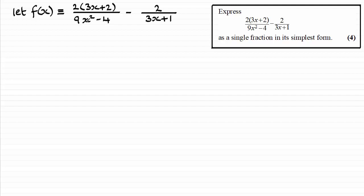9x squared is the square of 3x and 4 is the square of 2. So using the difference of two squares for that, you should factorize that and get 3x minus 2, 3x plus 2.